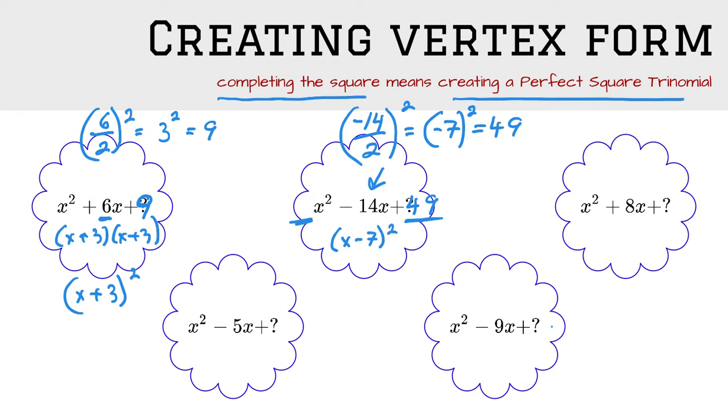So the last example in the top row, 8 divided by 2 is 4, 4 squared is 16. To factor it, take the middle term with its sign, divide it by 2, and square.